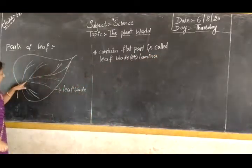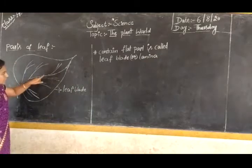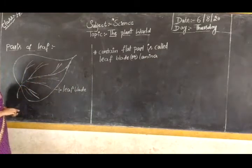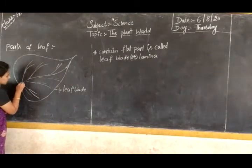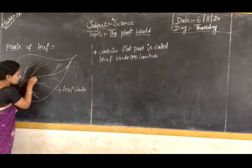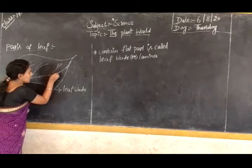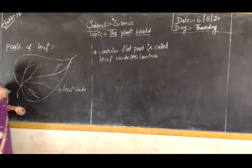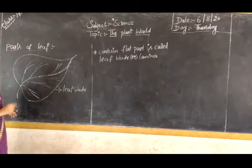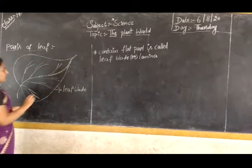In the middle or in the centre of the leaf, we will see a thick line. This is the thick line. This line we call it the midrib.